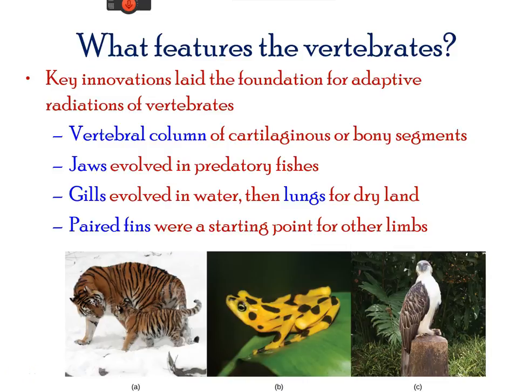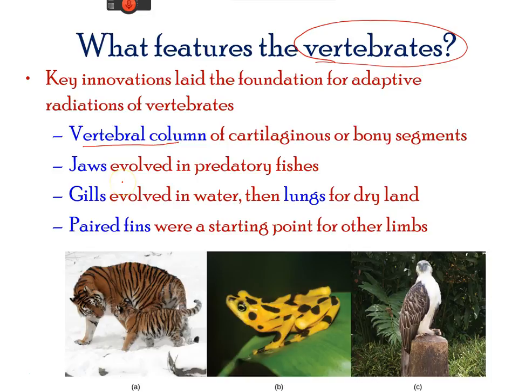As mentioned earlier, the animal kingdom is divided into two major groups: vertebrates and invertebrates. Vertebrates refer to all animals that have a vertebra, or backbone, which is cartilaginous or bony in nature.